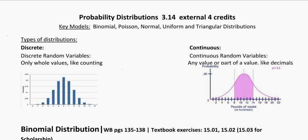The ones that are discrete are ones like binomial and Poisson, and the ones that are continuous are your normal, your uniform, and your triangular.